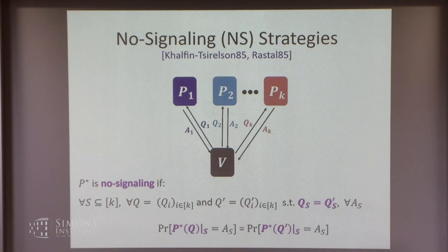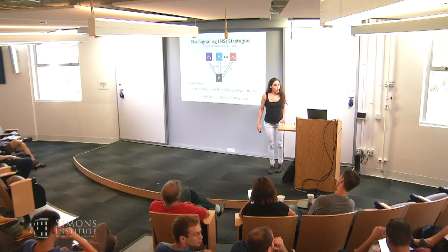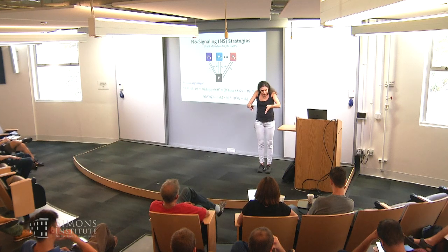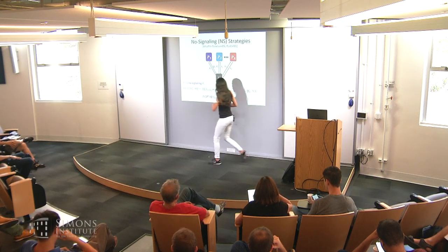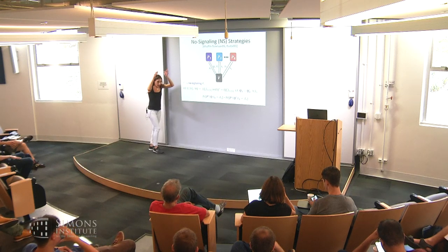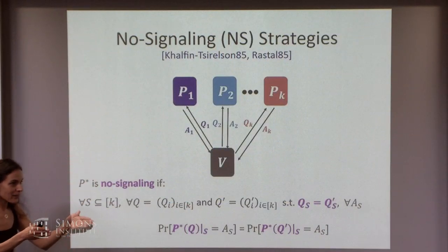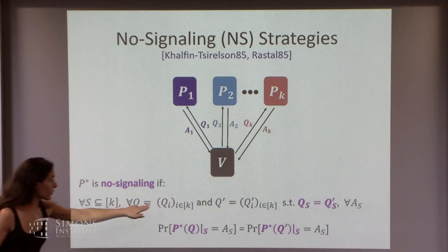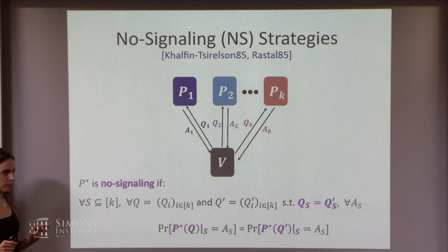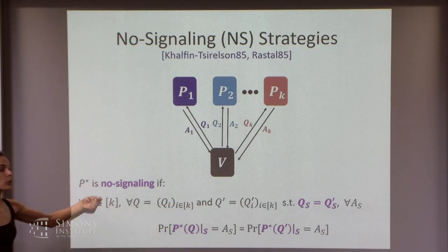To clarify: for any subset S, I want to say the distribution of their answers is the same no matter what the other queries are. For any q and q prime — if you look at the answers of the no-signaling strategy on S, whether given q or q prime, if q and q prime agree on S, the distribution is the same. The distribution really only depends on q sub S, the queries restricted to set S.